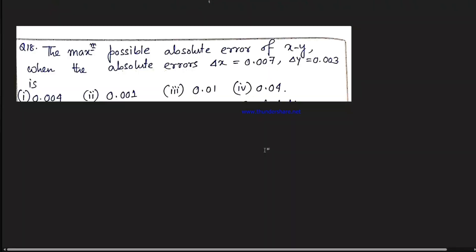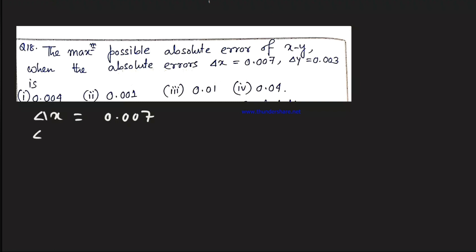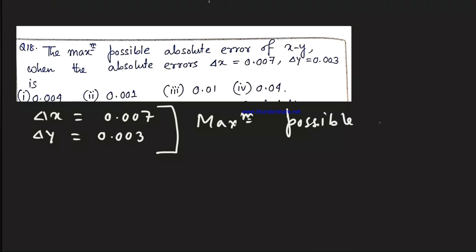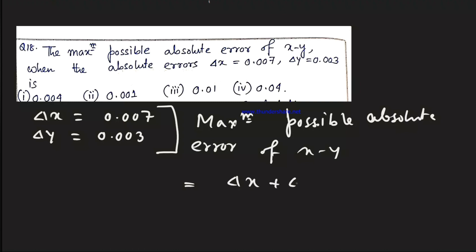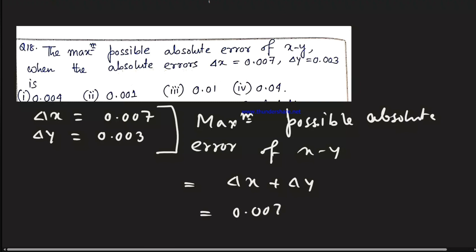Find the maximum possible absolute error of x − y, when absolute errors Δx = 0.007 and Δy = 0.003. The maximum possible absolute error of x − y equals Δx + Δy = 0.007 + 0.003 = 0.01. This is the maximum possible absolute error.